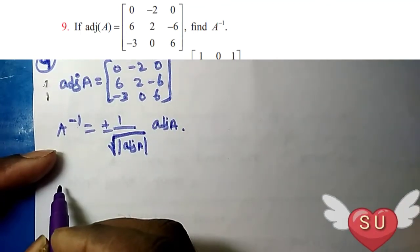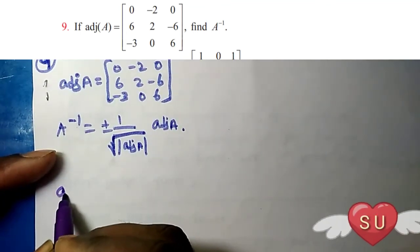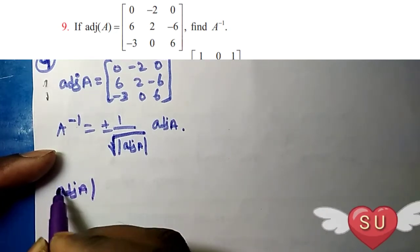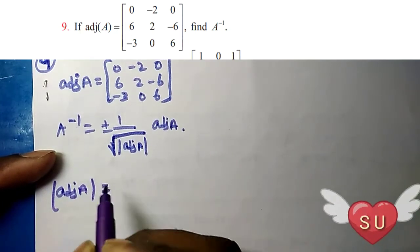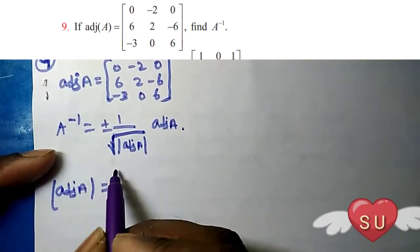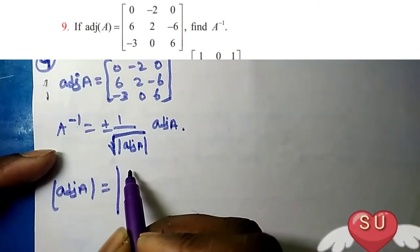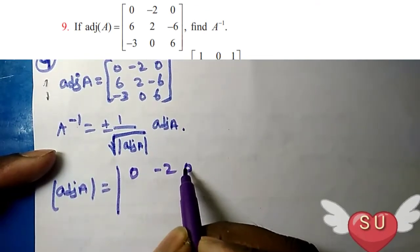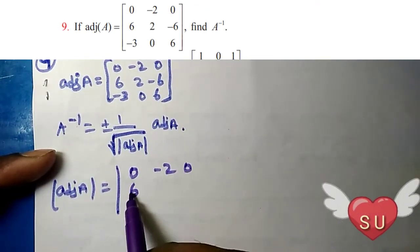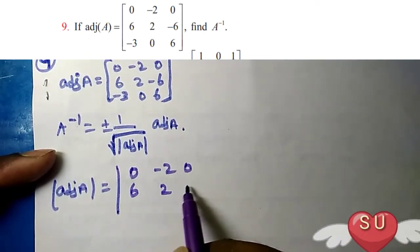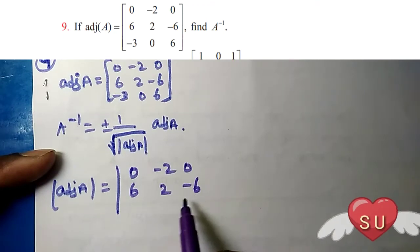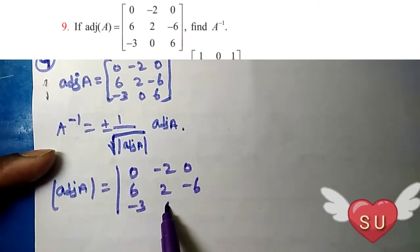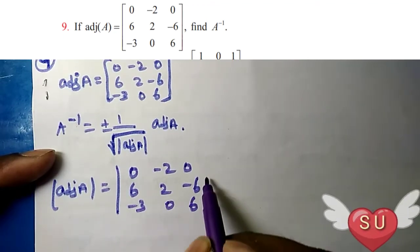So, first I will find A times adjoint A. Minus A, so, already adjoint A — put it in here. So, already: minus A, 0, 0, minus 2, 0, 6, 2, minus 6, minus 3, 0, 6.